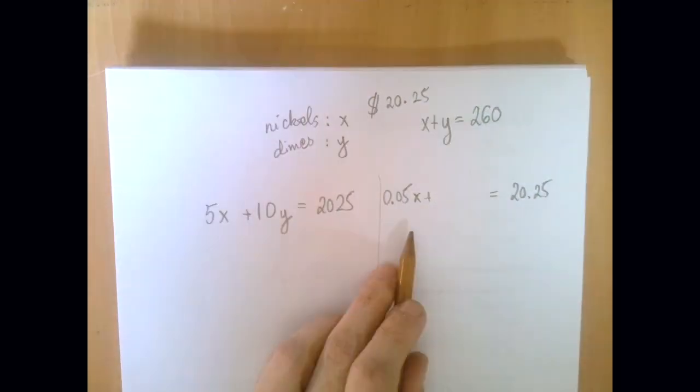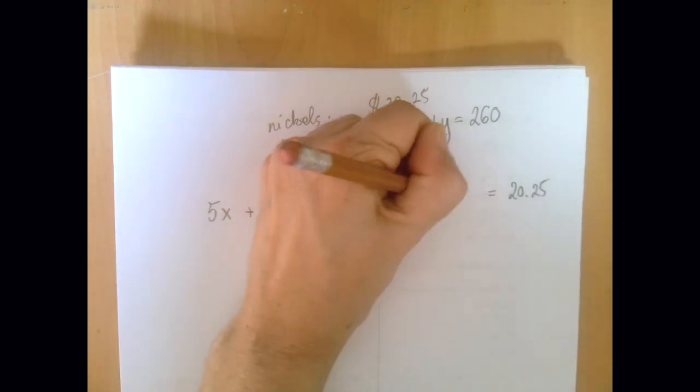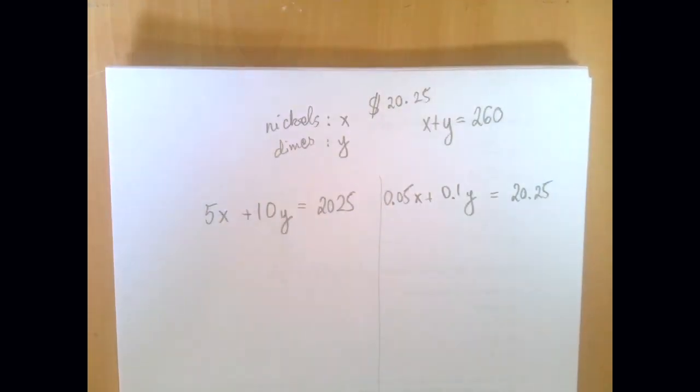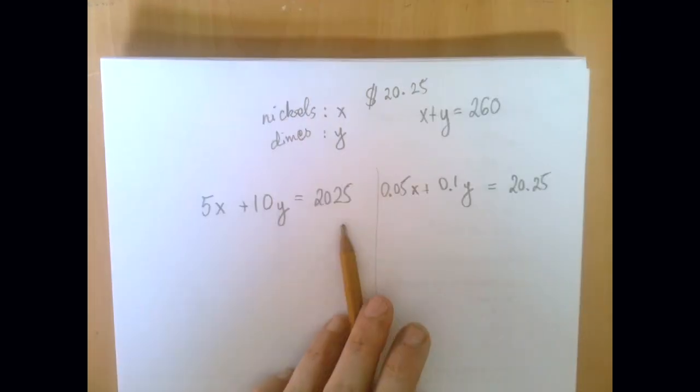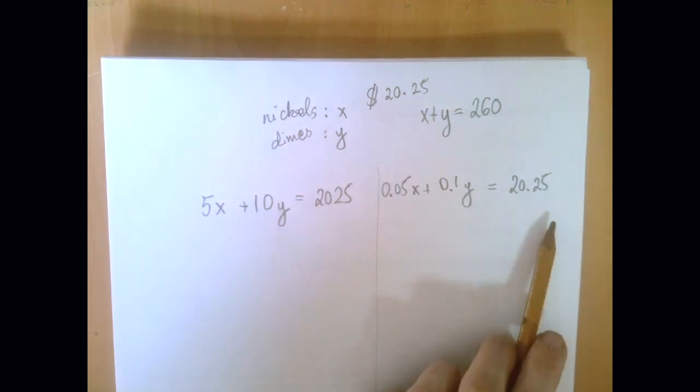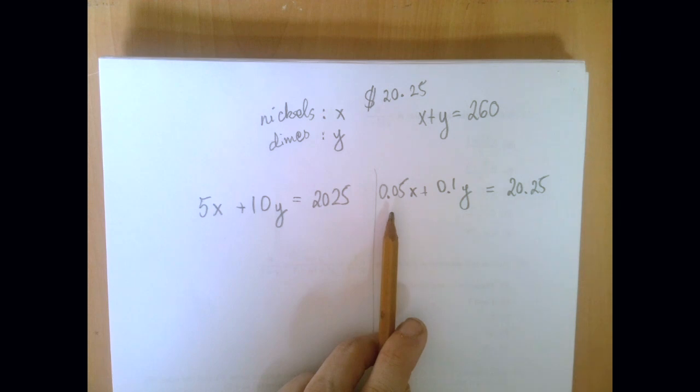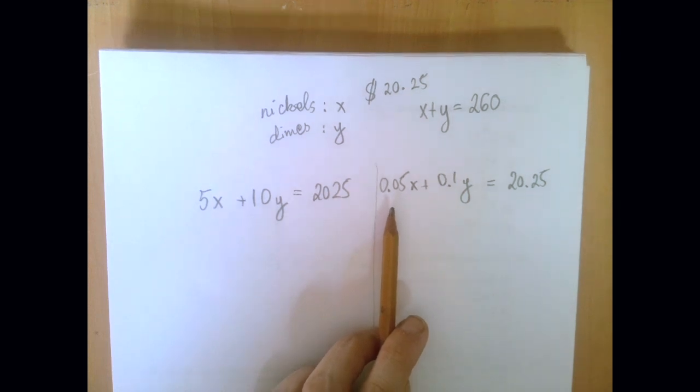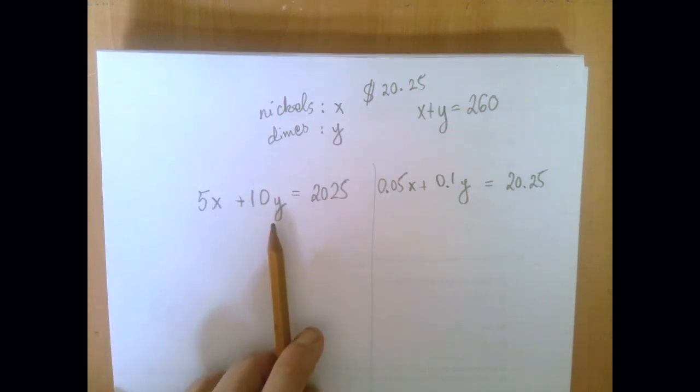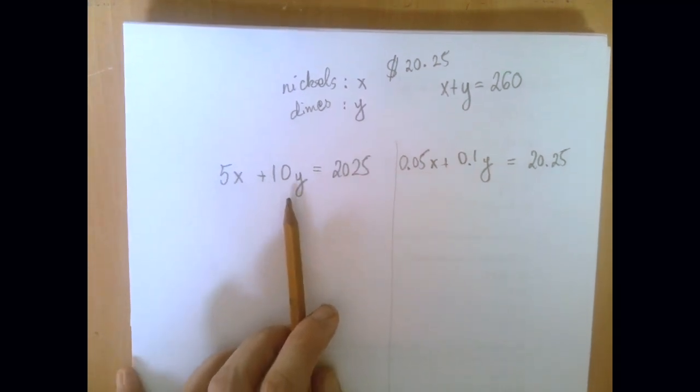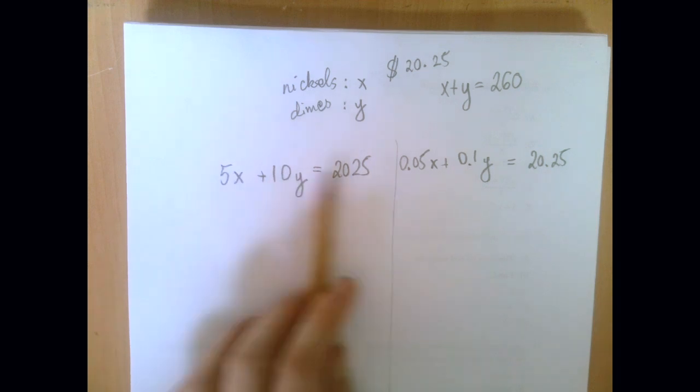So 0.05 times x plus 0.1 times y equals 20.25. This is a fairly unpleasant equation, but it can be easily fixed. We can make all the decimals go away if we just multiply both sides of this equation by 100. But then we're going to get this. So you do this problem a few times and know that it's just best to go for pennies.